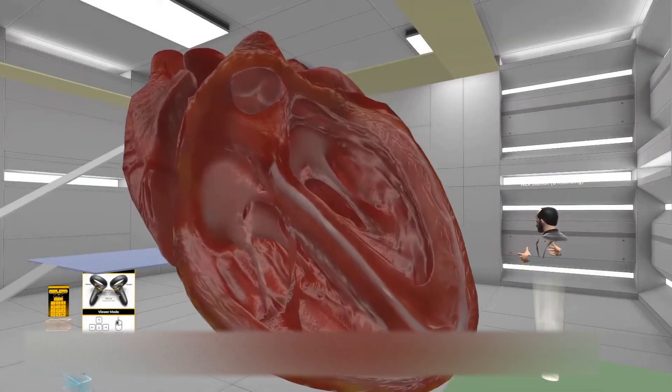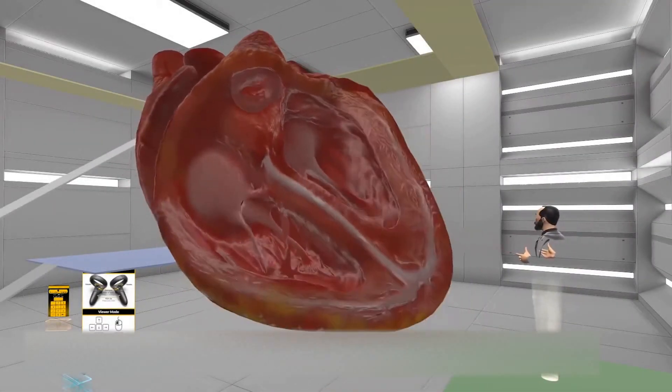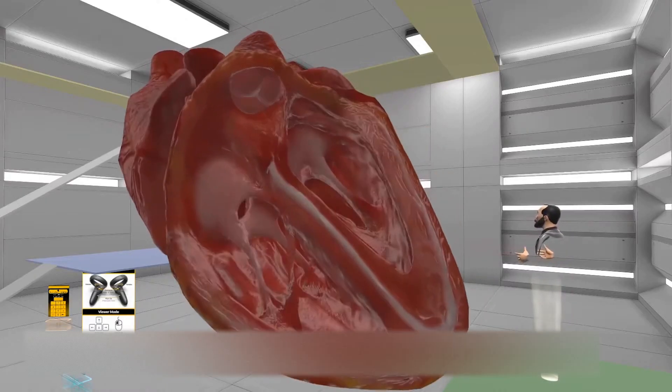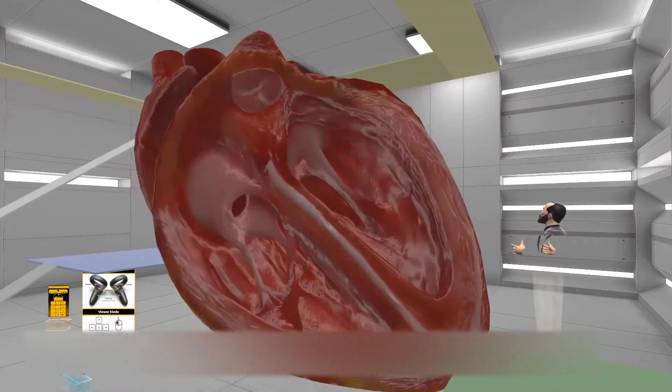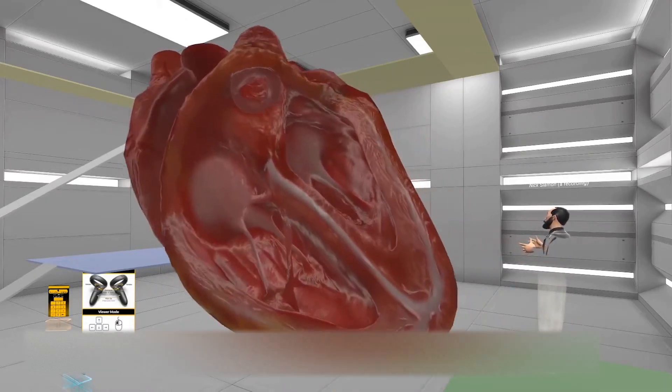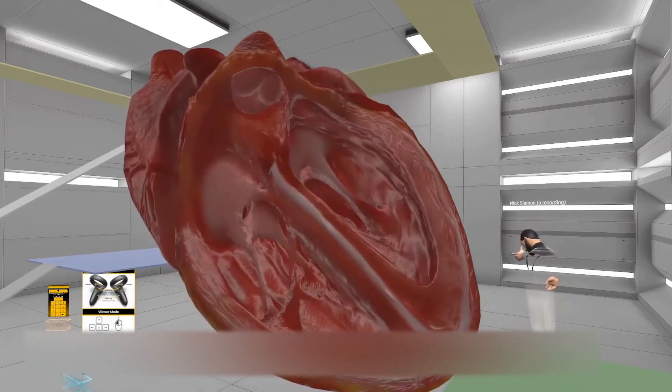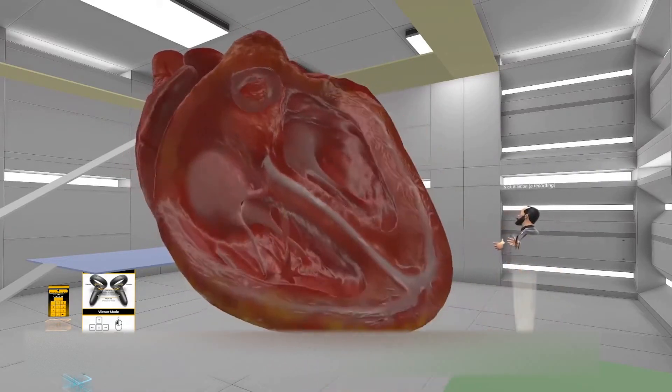Again, compared to the right ventricle, the left ventricle is thicker, tougher, stronger, can really eject blood all the way out to the fingers and toes. And where is it going to eject that blood through? Well, it's going to go through this tricuspid aortic valve.